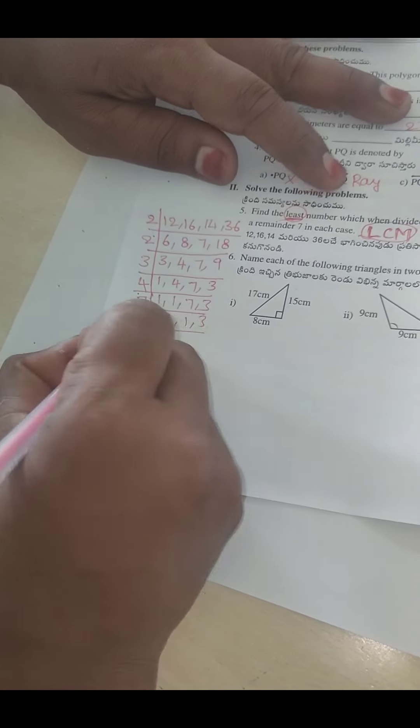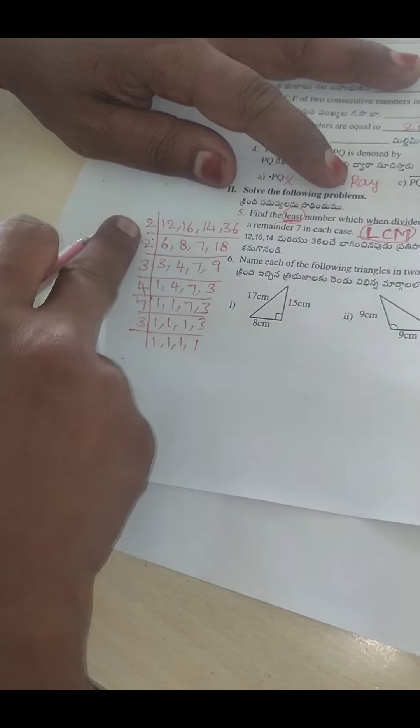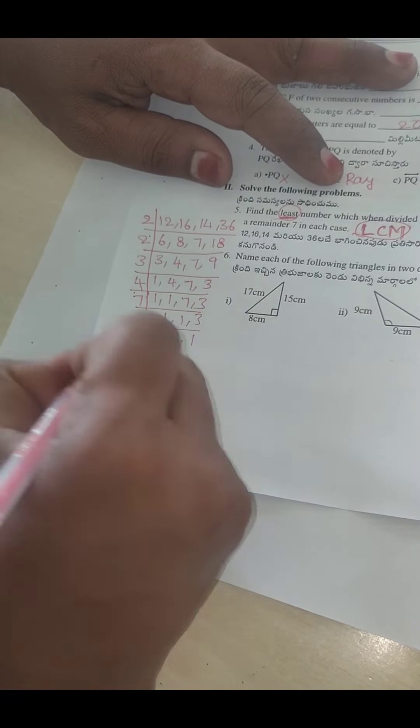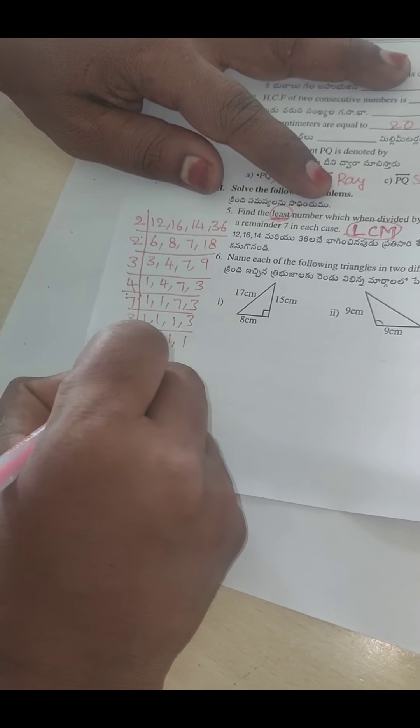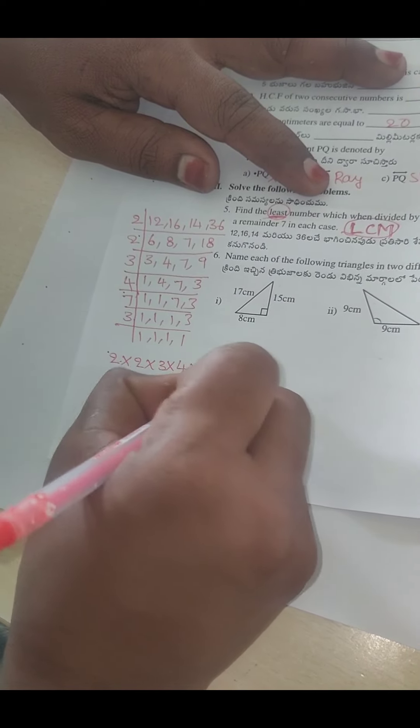Next, three. In three tables: one, one, one, one time. Now do multiply all the factors. Two into two into three into four into seven into three.